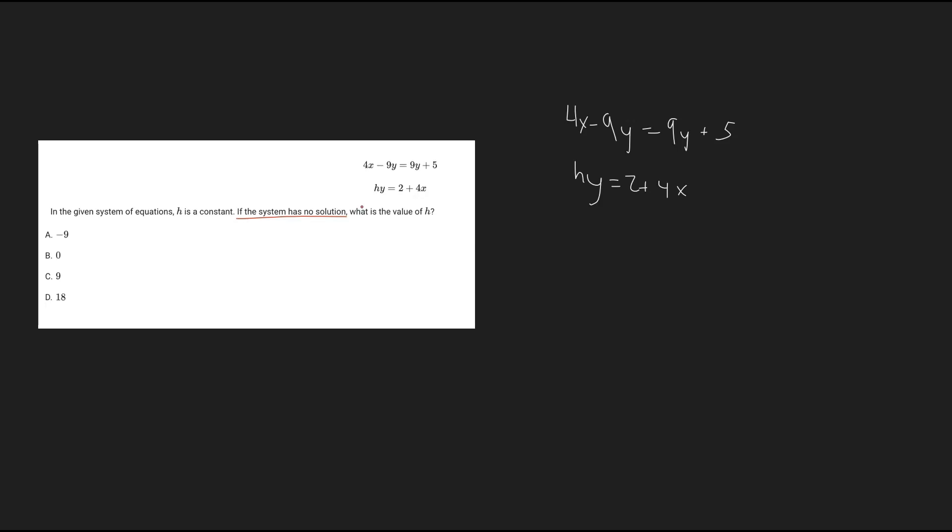All right, so if the system has no solution, that means the lines will never intersect. And we can see here we're dealing with linear lines, and so linear lines that never intersect are going to be parallel lines. And we know parallel lines have the same slope and different y-intercept.